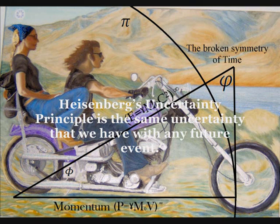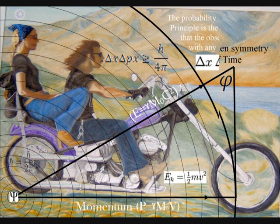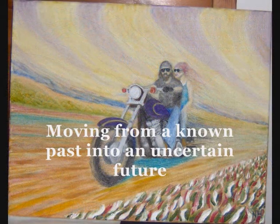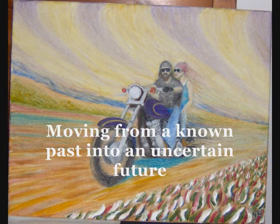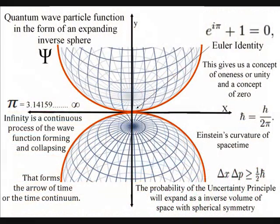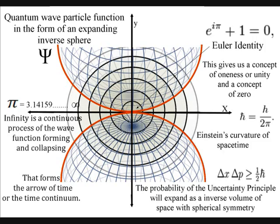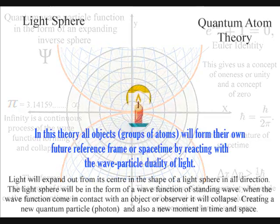From these two simple ideas, quantum mechanics can be explained in a way that exactly fits in with our everyday experience of nature and time, moving from a known past into an uncertain future. We live in a dynamically evolving universe of continuous change because of the probabilistic nature of the wave-particle duality of light.